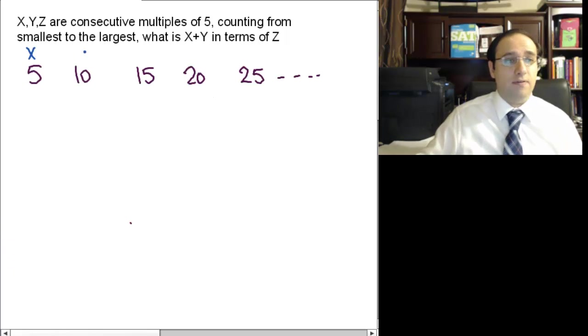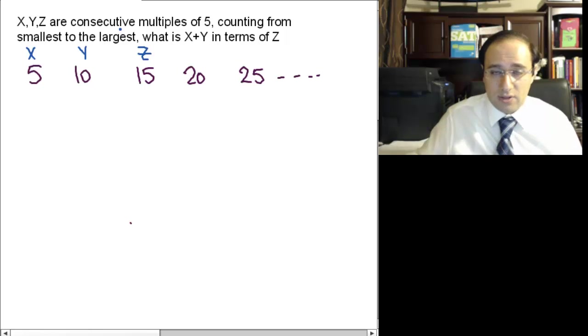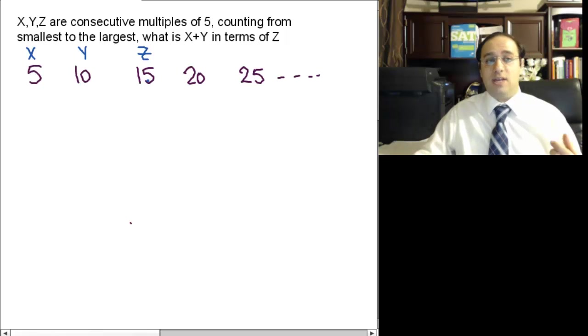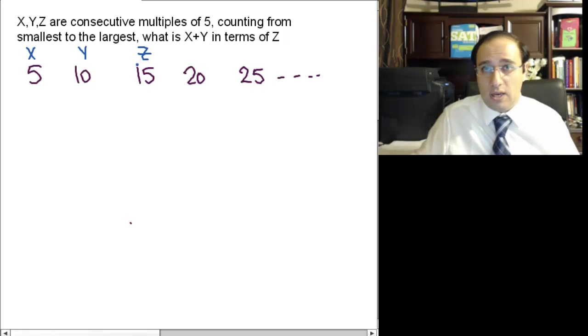And I'll assume that X is 5, and Y is 10, and Z is 15. Here, if I had multiple choice, if I had answer choices, I could test each of the answer choices using X is 5, Y is 10, and Z is 15, and see which one is the only correct one. Now, I want to try to do this without having any answer choices.